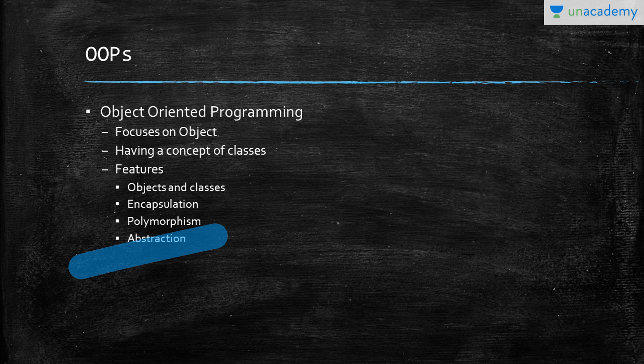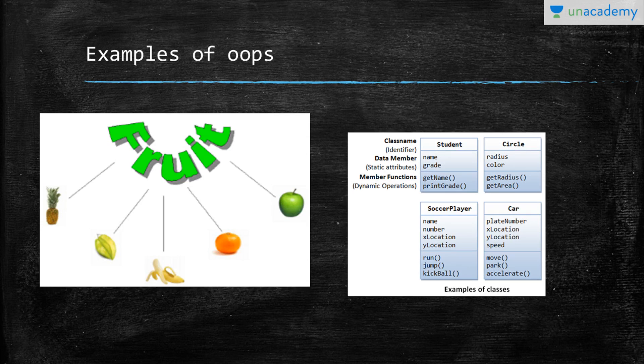We will be looking into that further. Abstraction is data security that keeps my object-oriented or high-level language in a more secure manner. In abstraction, we only show the data that we want to show to the user, not the whole information. For example, here we have a fruit.